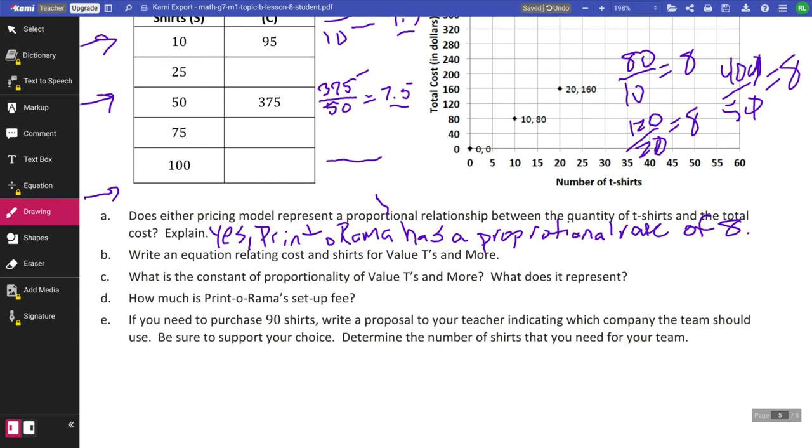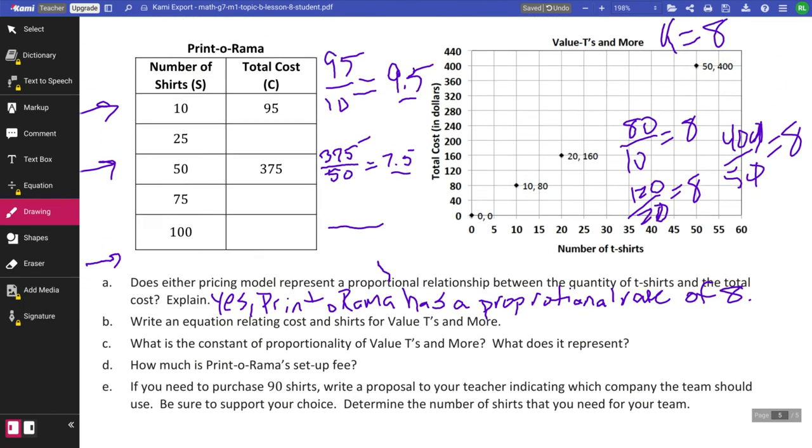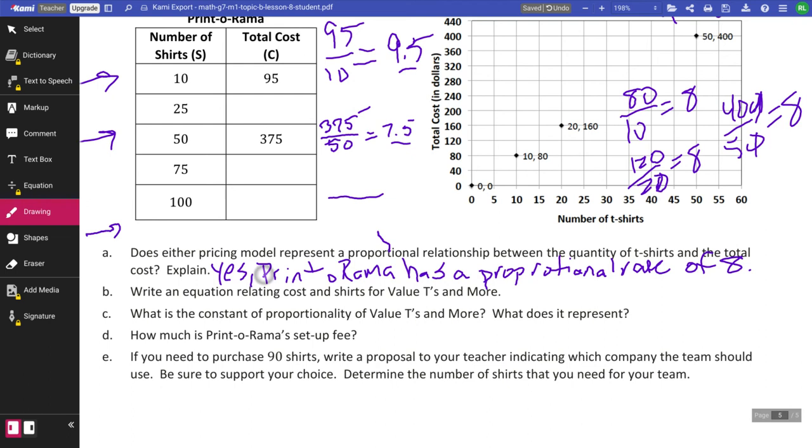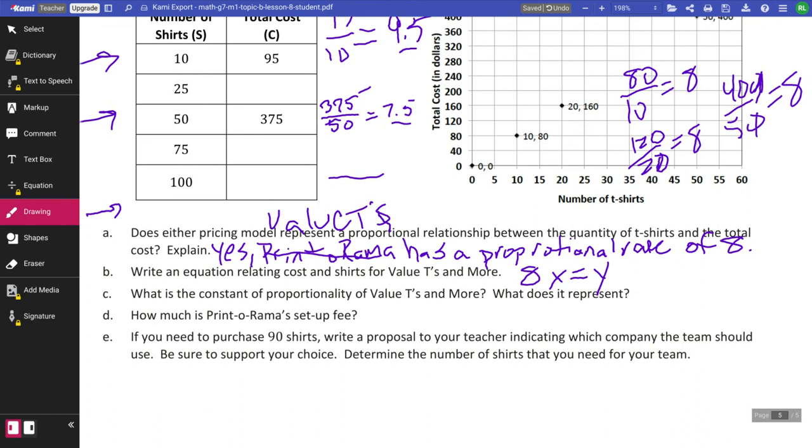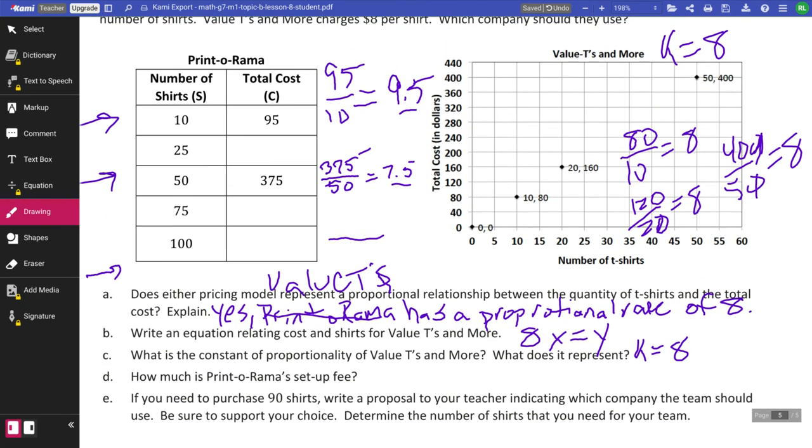Write an equation relating cost in shirts for value T's and more. Oh, I'm sorry. So this was not Print-O-Rama. This was value T's. This is value T's. So my rate is 8, X equals Y. 8 times X equals Y. What is the constant of proportionality of value T's and more? Well, K equals 8, which is one shirt for $8.